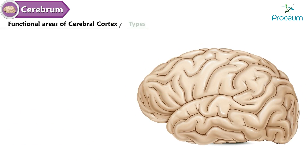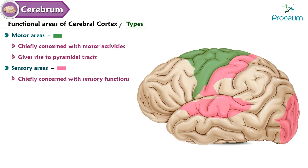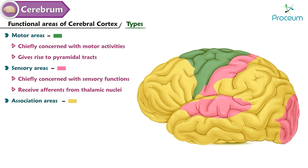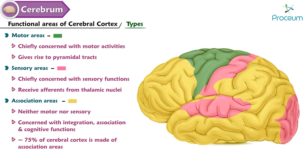The functional areas of the cerebral cortex are of three types. Motor areas are chiefly concerned with motor activities and give rise to pyramidal tracts. Sensory areas are chiefly concerned with sensory functions and receive afferents from thalamic nuclei. Association areas are neither motor nor sensory but are concerned with integration, association, and cognitive functions. Approximately 75% of the cerebral cortex is made up of association areas.